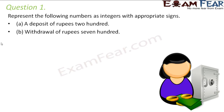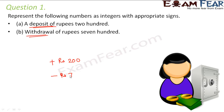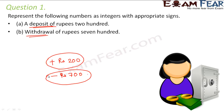Question number one: represent the following numbers as integers with appropriate signs. A deposit of rupees 200 — deposit means you are giving this money into the bank, so it would have a plus sign because the money is getting added to your account. Withdrawal of rupees 700 — withdrawal means taking out money, so your balance is decreasing, giving it a minus sign. So plus 200 is deposit and minus 700 is withdrawal.